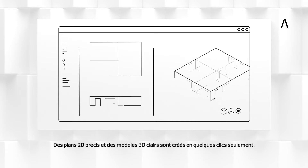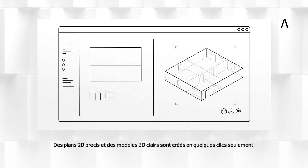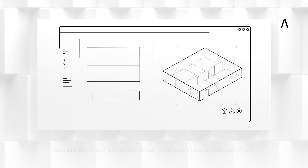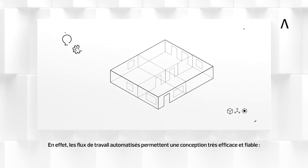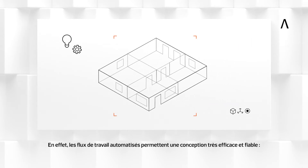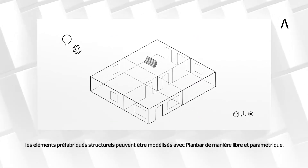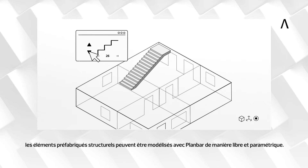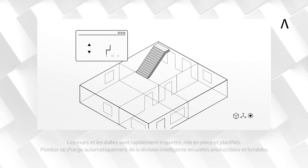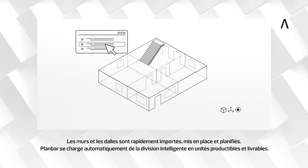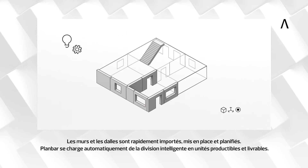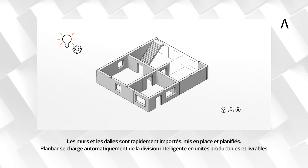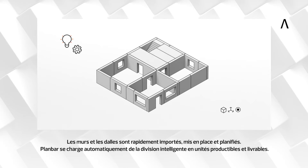Precise 2D plans and clear 3D models are created with just a few clicks, because automated workflows enable highly efficient and reliable planning. Structural precast elements can be modeled with Plan Bar both freely and parametrically. Walls and slabs are quickly imported, analyzed, and planned. Plan Bar automatically takes care of the intelligent division into producible and deliverable units.